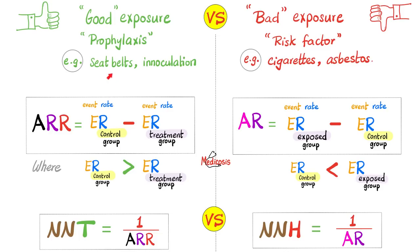When I get exposed to a good thing, my risk is reduced — we call this absolute risk reduction, and the event rate in the control group will be greater than in the exposed group. But with exposure to something bad, it's the opposite: the event rate in the exposed group is greater than in the control group. Flipping absolute risk reduction gives you number needed to treat; flipping attributable risk gives you number needed to harm.